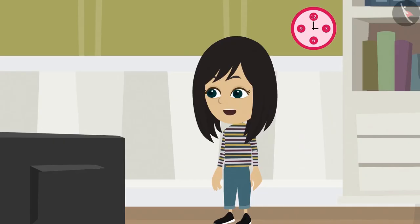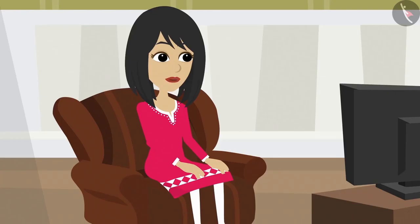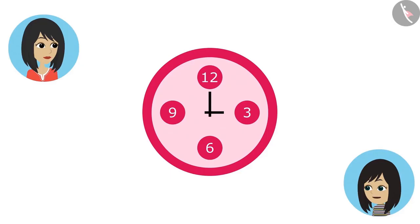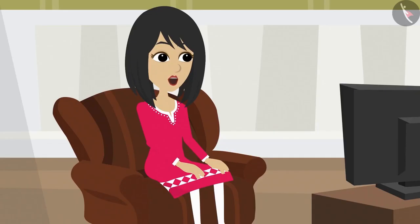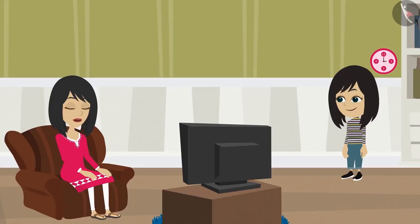Mommy, look, I have made a list of objects where a circle has been used in the design. Okay, Neha, can you read out your list? The very first is our wall clock. It has six circles. Our clock has six circles? I have never even looked at the clock so carefully.